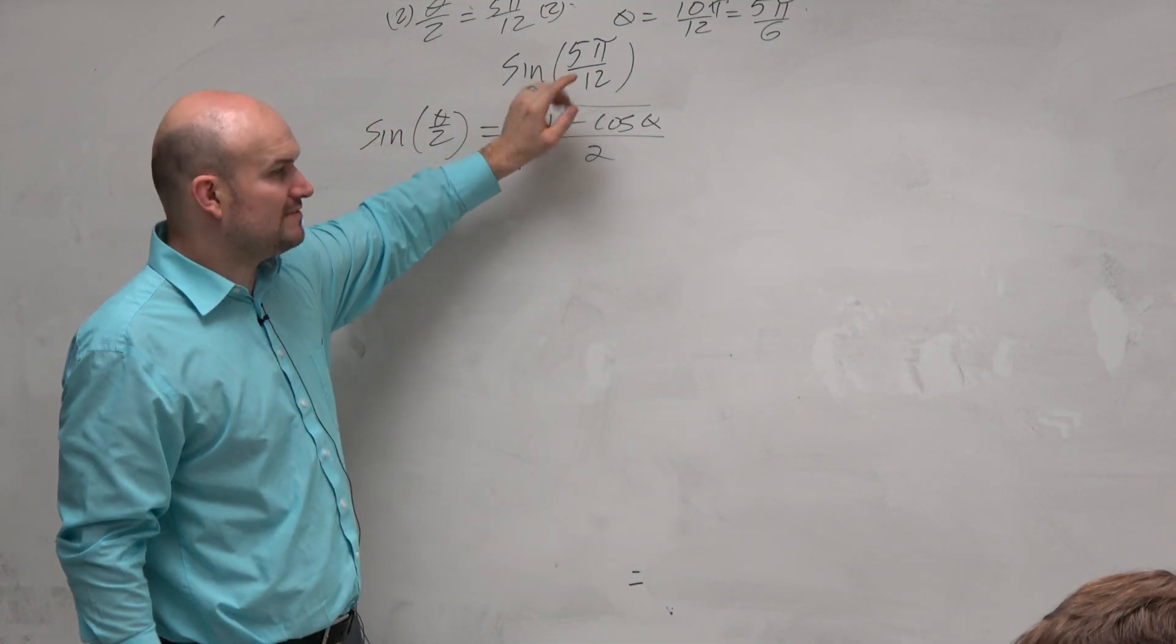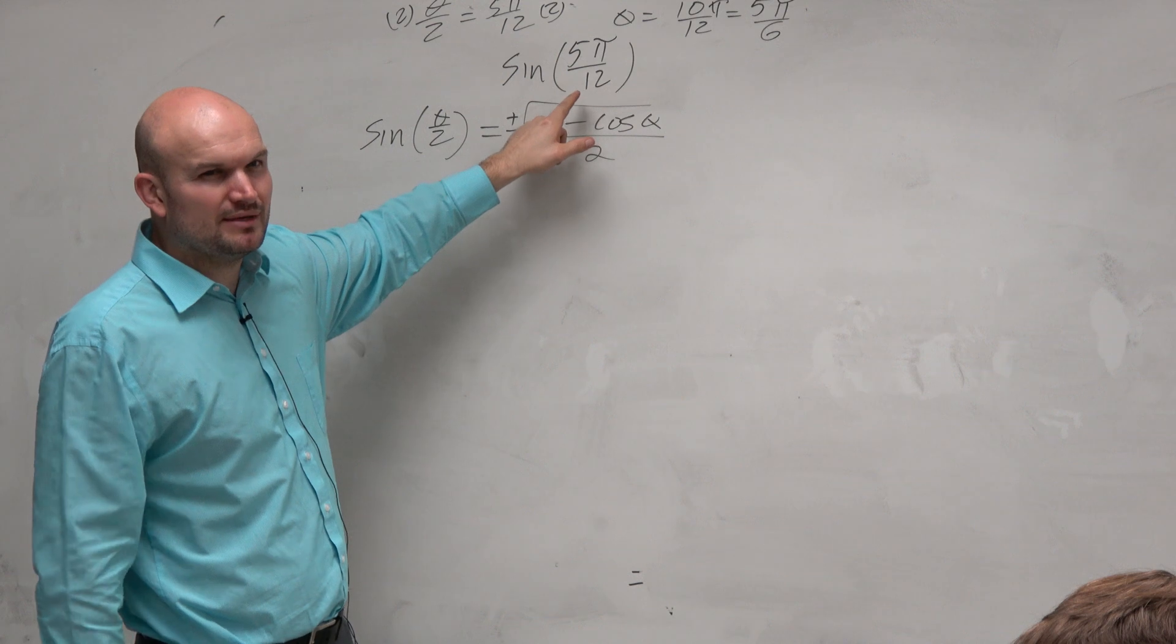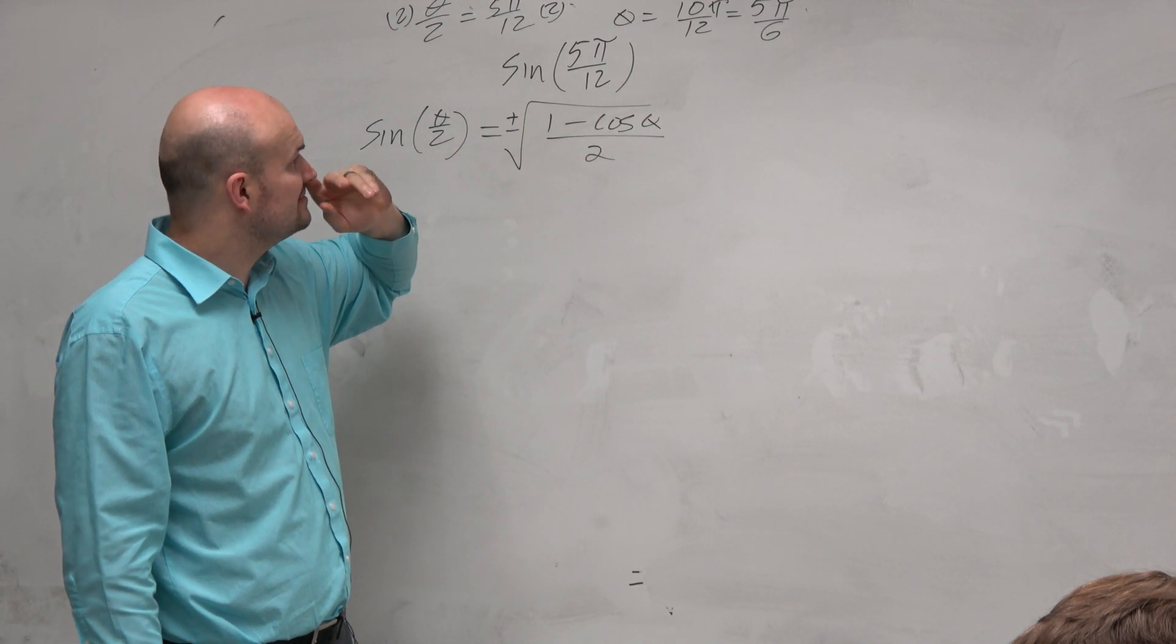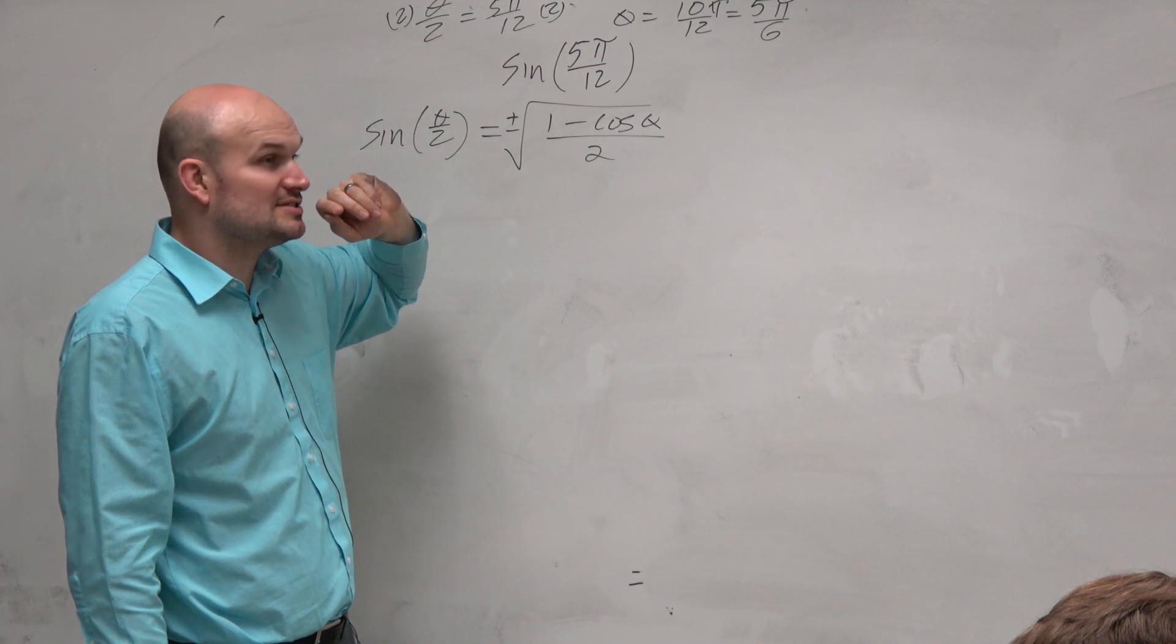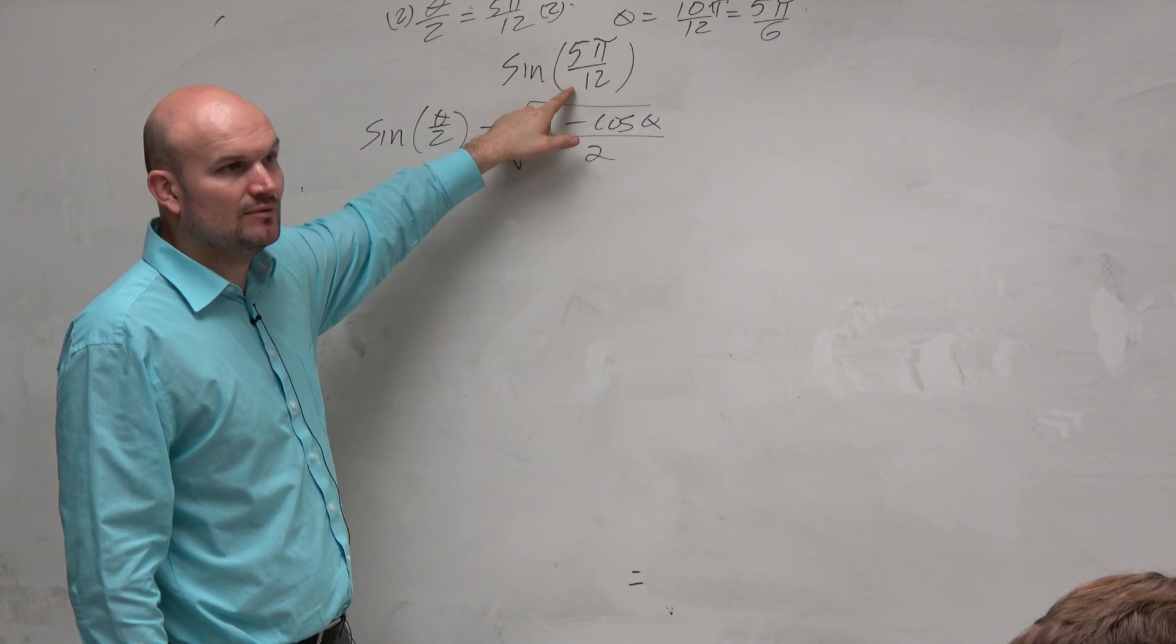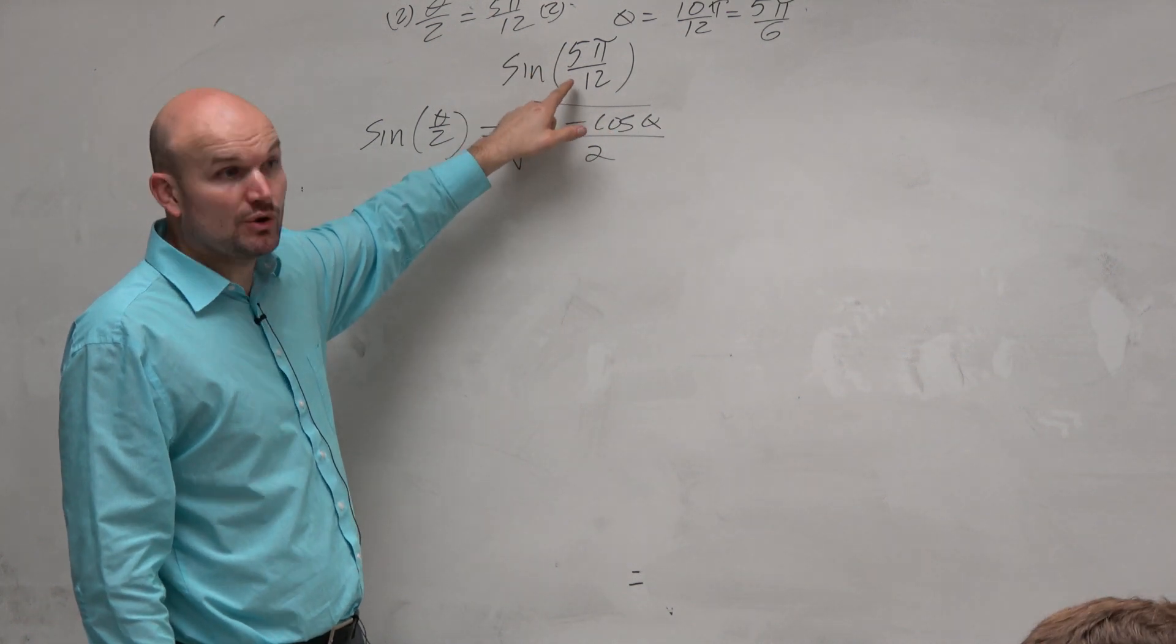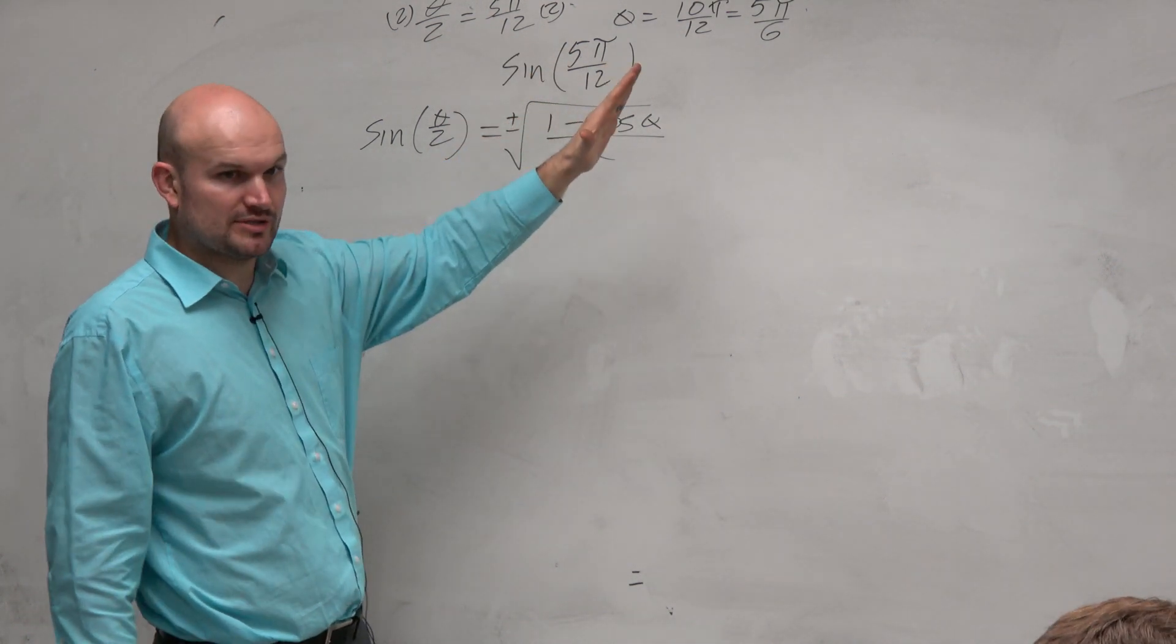So 5π over 12, does anybody know which quadrant that would be in? Be careful. Think about what's π: 12π over 12, right? What's π over 2? 6π over 12. So this is short of π over 2, so it's still in the first quadrant.